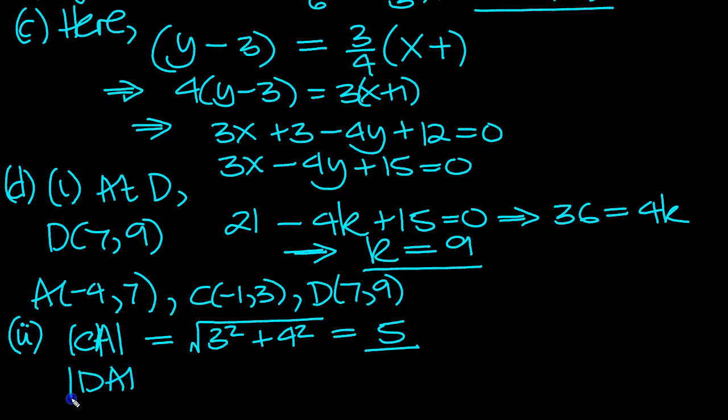And then DA, let's work out that. So the difference in the x coordinates, DA: 7 to -4 is 11, so it's 11² using Pythagoras. And the difference between the y values: 9 to 7 is 2, so that's 2². 11² is 121 plus 4 is 125, square rooted.